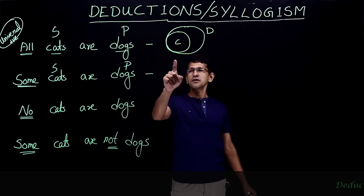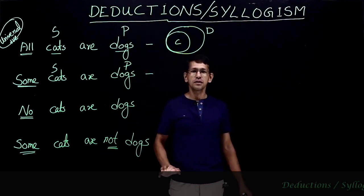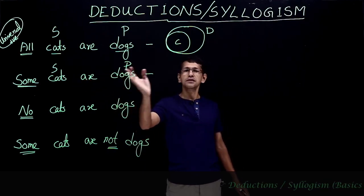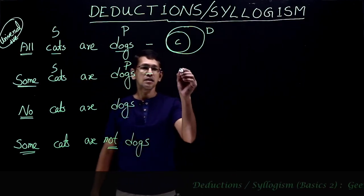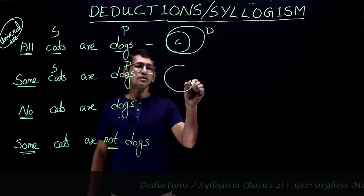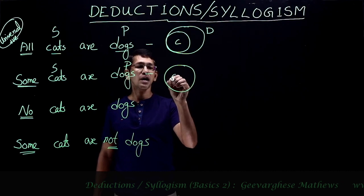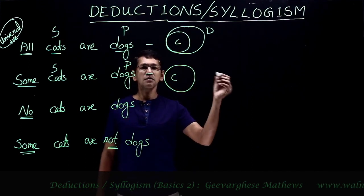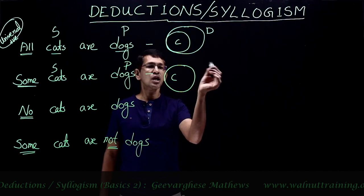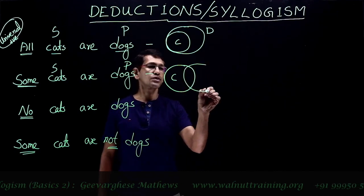We have confirmed the diagram for all cats or dogs. Now the question is: what would be the diagram for some cats or dogs? Some cats must be dogs. So this is the diagram of cats and we need the diagram of dogs. Some cats would be dogs, so that would be an intersection between cats and dogs.